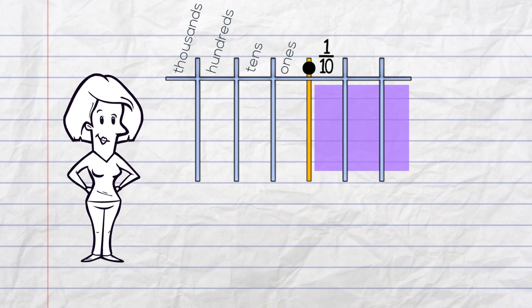The first column is tenths. Then we've got hundredths. And thousandths. And so on.